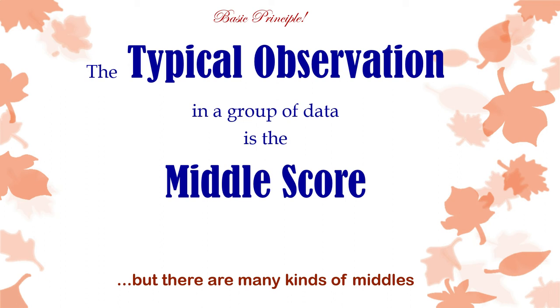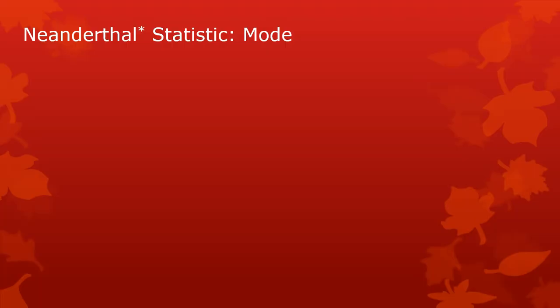So here's a basic principle: the typical observation in any group of data is a middle score. There are many kinds of middles, and the nature of the data determines the treatment of the data — sometimes you should use one measure of center, sometimes another.